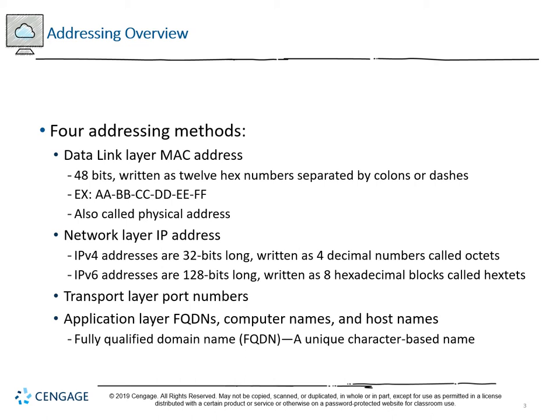The network layer IP address — moving from layer 2 to layer 3 — is either version 4 or version 6. IPv4 addresses are 32 bits in length, written as four decimal numbers called octets — four blocks of eight binary digits, resolved to a number from 0 to 255. IPv6 uses hexadecimal and is 128 bits long, resolving to 32 hexadecimal characters. Each block in an IPv6 address is called a hex-tet.